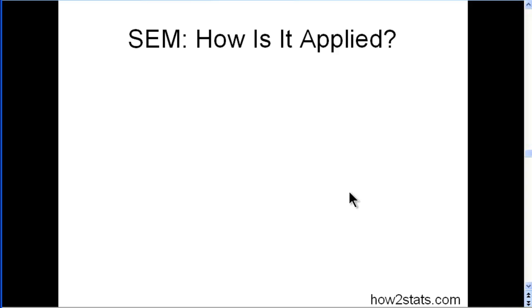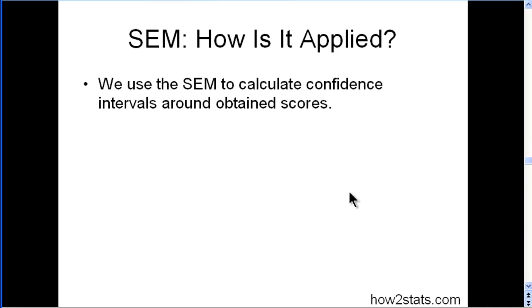So how is it applied? We use the SEM to calculate confidence intervals around obtained scores. And there are probably three typical confidence intervals that we estimate. It's 68% confidence intervals, which is simply the obtained score plus or minus the standard error of measurement.